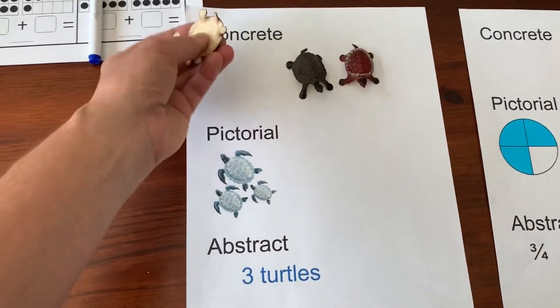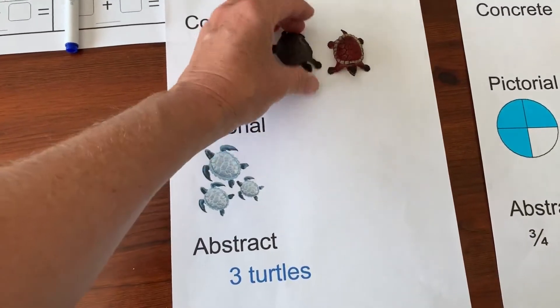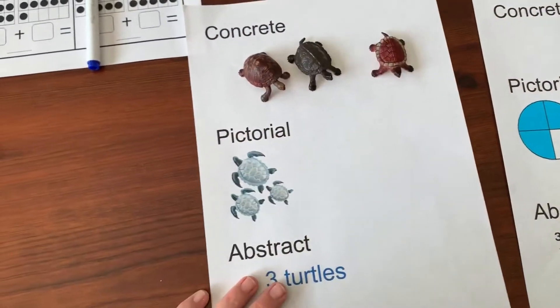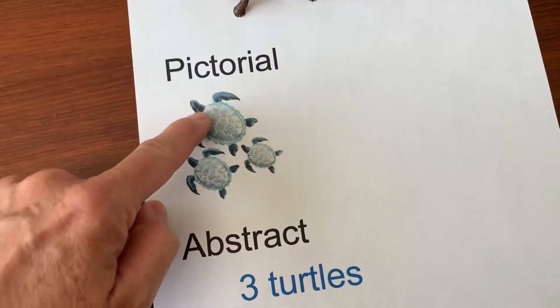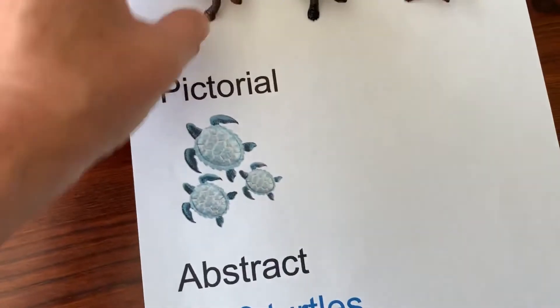Concrete means you give the student actual pieces. Here I have three turtles. Pictorial would be a picture of three turtles. They can count them, but they can't get their hands on them like they can with the concrete.